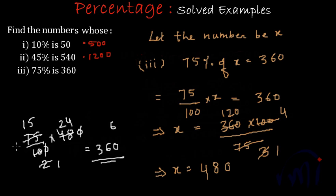So this proves that our calculation is correct, because 75% of 480 is giving us 360. So in this case, the value of that number will be 480.